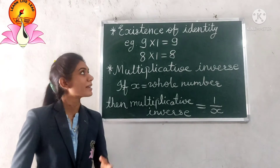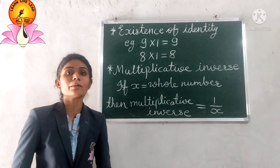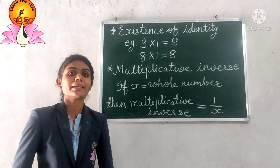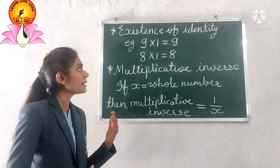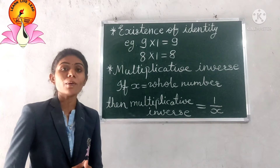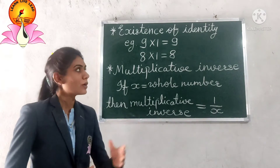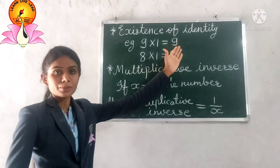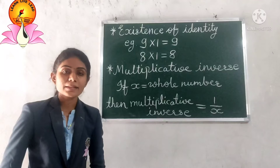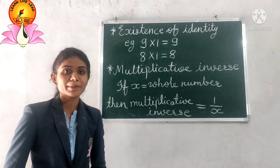The next property is the existence of identity. If x is any whole number and it is multiplied by 1, we get the number itself. For example, 9 × 1 = 9, and 8 × 1 = 8. So this is called the existence of multiplicative identity, and it is applicable for multiplication.